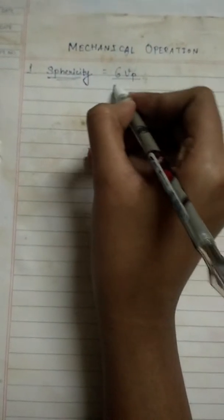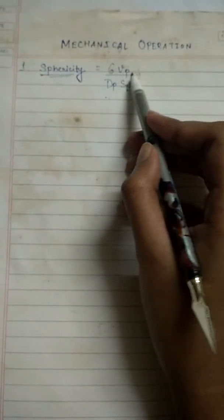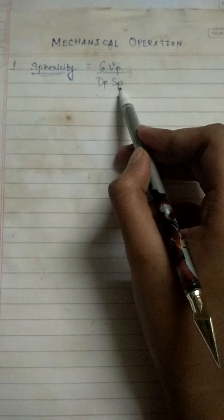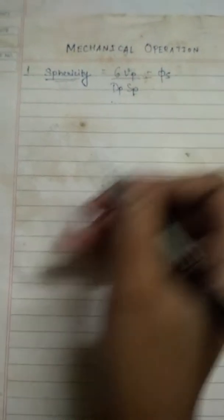The first thing that we will be talking about is sphericity. Sphericity determines how spherical the particle is that you are dealing with. Basically all the particles that you will have are not of uniform shape, so it is important to know what is the sphericity or how close to being a sphere they are. The formula for sphericity is 6 vp by dp sp. Here dp stands for the equivalent diameter of the particle, vp stands for the volume of the particle, and sp stands for the surface area. So this gives me an idea about sphericity, and it's denoted by phi s.